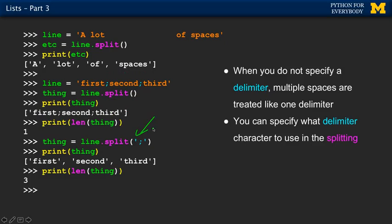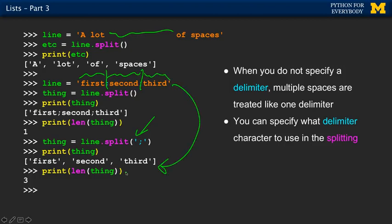On the other hand, you can tell split to split based on a different character other than white space. When you tell it to split on a different character, it doesn't compress multiple spaces — it only splits on what you told it to split. So it looks, chops, looks, chops, looks, chops. What we get is a list: first, second, and third. This is useful when you've got some weird data, and we'll see situations where we use split instead of doing multiple find calls.